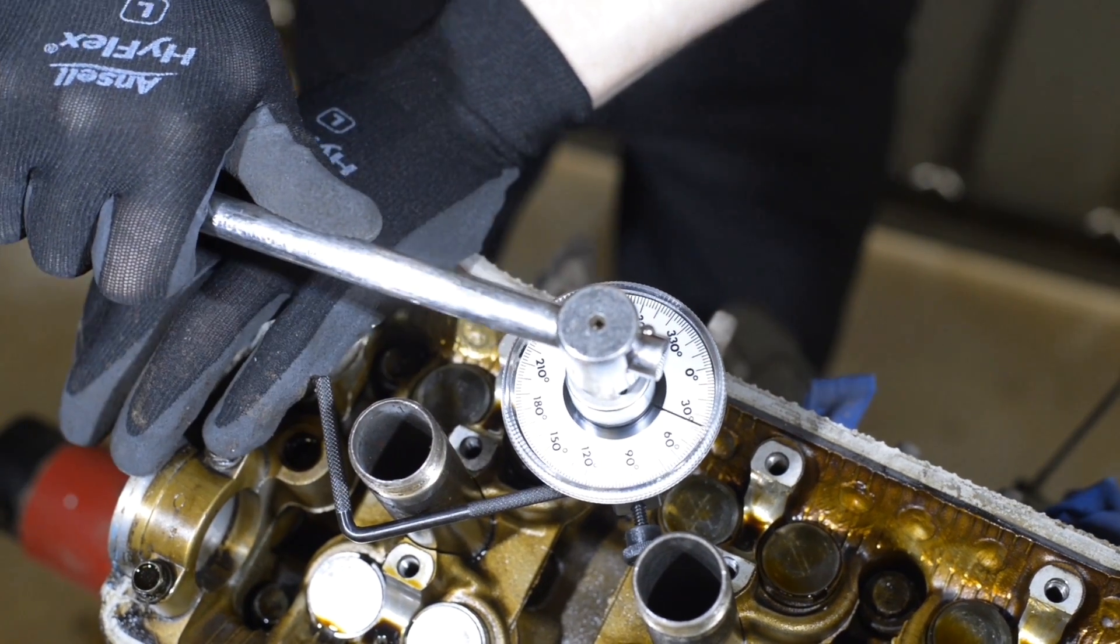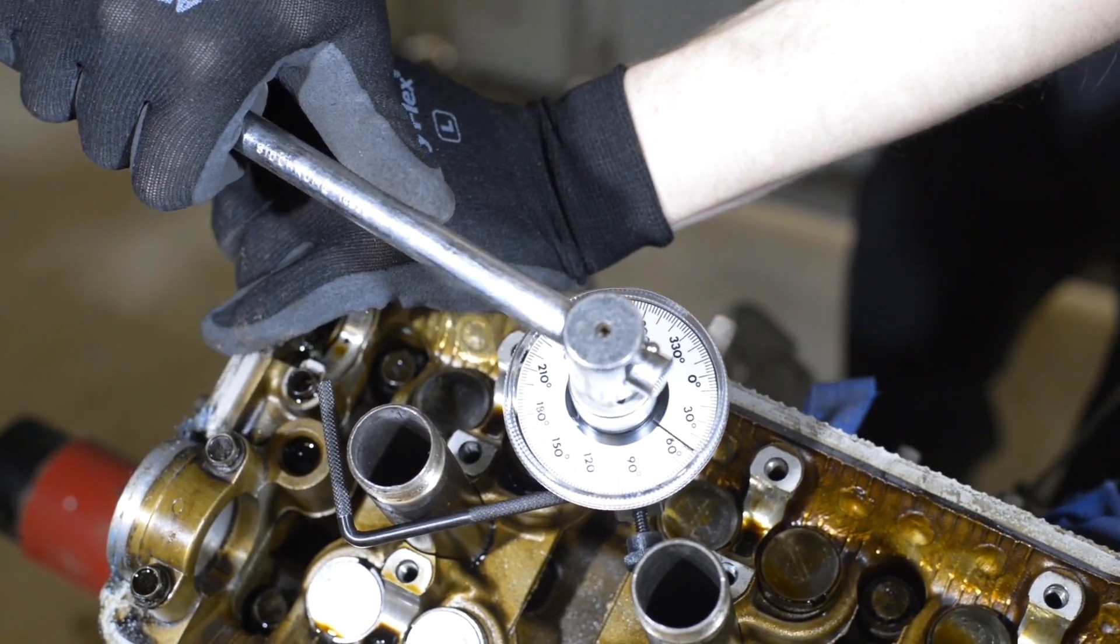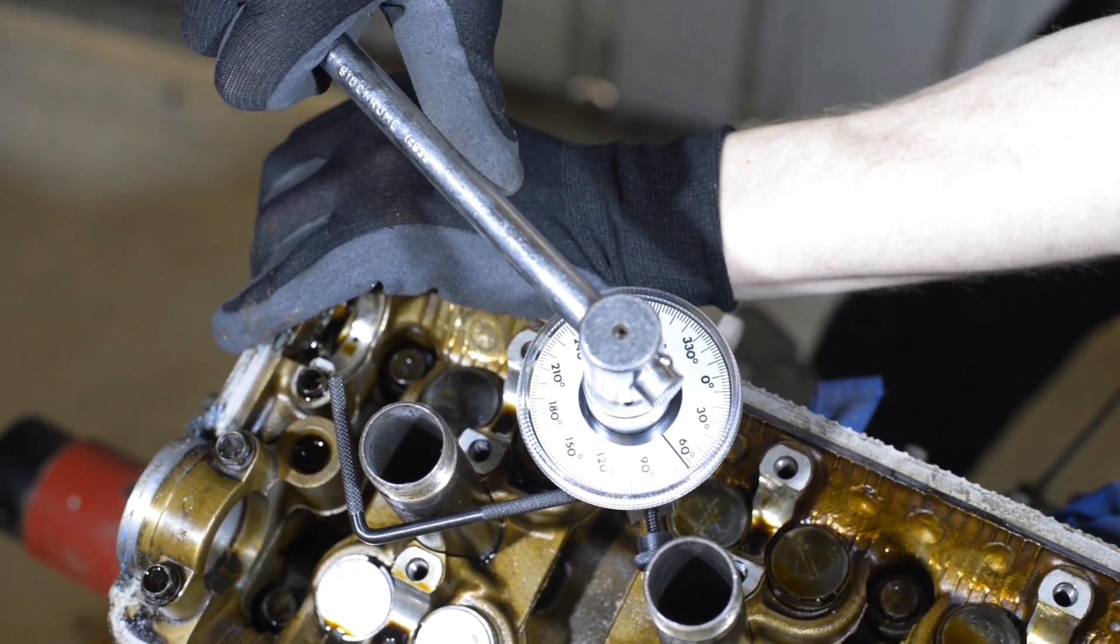Now, with the breaker bar inserted in the top of the gauge, tighten the fastener until the needle reaches the desired setting.